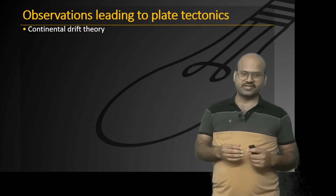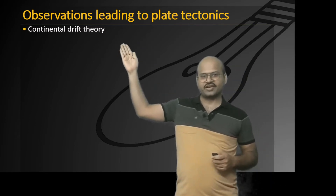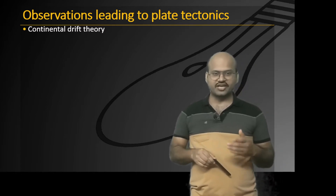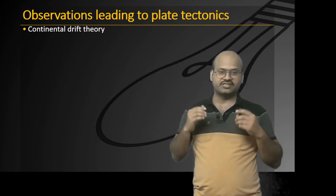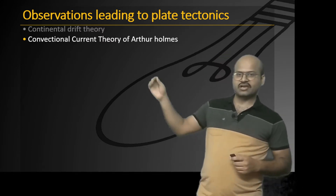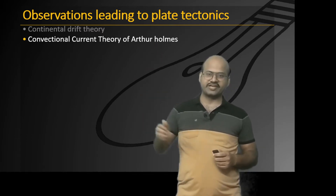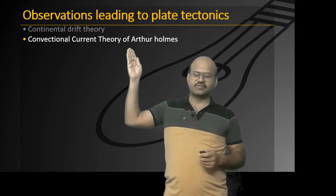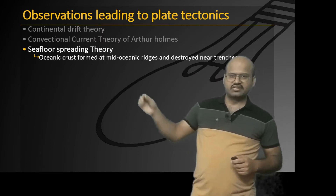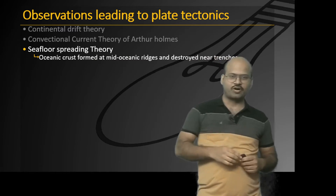The most important observation leading to plate tectonics theory was the continental drift theory, which came in 1912 by Wegener, where he said that the continents are in continuous motion. This theory changed the direction of thinking of people. Then came the convection current theory of Arthur Holmes, which provided a mechanism for the movement of continents. This mechanism was also taken by seafloor spreading theory as well as plate tectonic theory. Seafloor spreading theory explained why mid-oceanic ridges and trenches are formed on the seafloor.